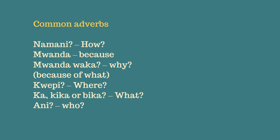The next one is kwepi. Kwepi means where. And we have the next adverb: ka, kika, and bika, which means what. And finally we have annyi, which means who.